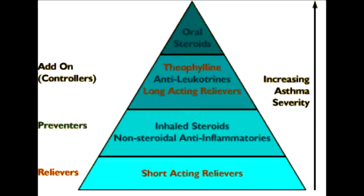Name all the groups of drugs that can be used in the treatment of asthma and describe why. The groups include beta-2 agonists, because these cause bronchodilation. Also methylxanthines such as theophylline can be used because of bronchodilation effects. Also muscarinic antagonists such as ipratropium, because this will lead to prevention of the parasympathetic tone, therefore also leading to bronchodilation. Corticosteroids and antileukotrienes can also be used because they prevent the late response to inflammation.